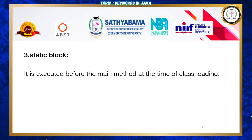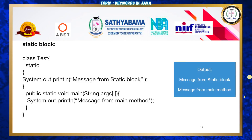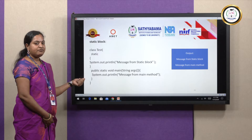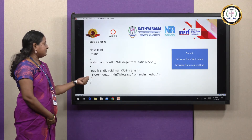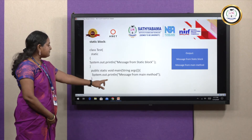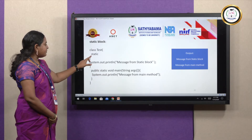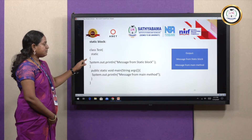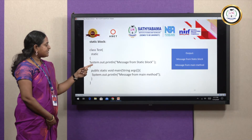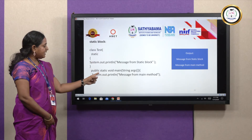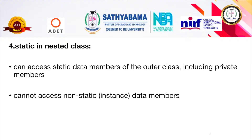Next is the static block. It is executed before the main method at the time of class loading. In the example, the class has a static block with a print statement and a main function with another statement. Before the main method loads, the static block loads first, so the output is 'message from static block' followed by the main method output.